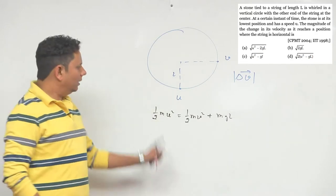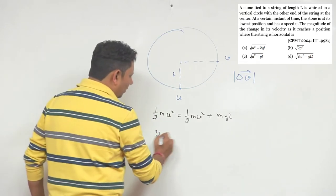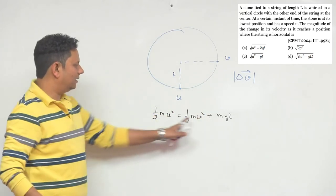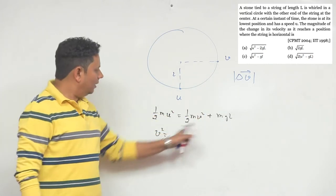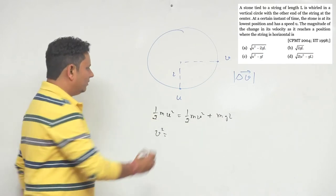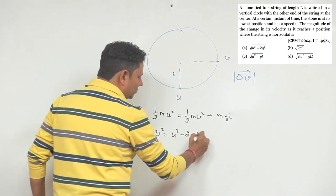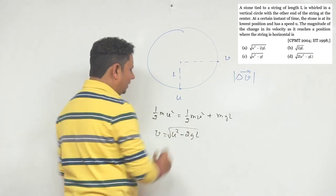Based on this one, we can say velocity V is equal to... m cancels. Take 2 and multiply. So V squared is U squared minus 2gL. This is V squared minus 2gL.